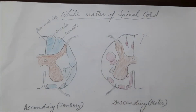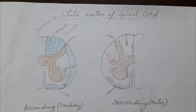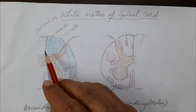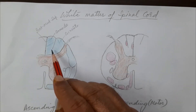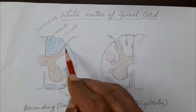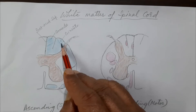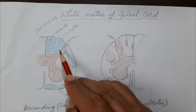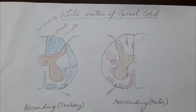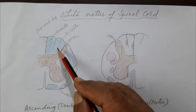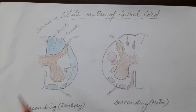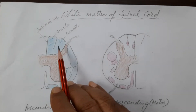The gracile fasciculus extends throughout the entire length of the spinal cord. The cuneate fasciculus, which is laterally placed, is only present above the mid-thoracic segments. So below mid-thoracic level, there is only one tract — the gracile tract. Both the gracile and cuneate fasciculi are sensory tracts going upward toward the brain.